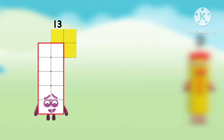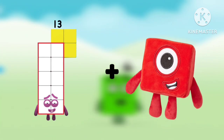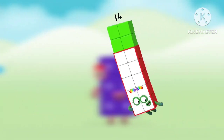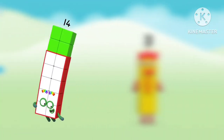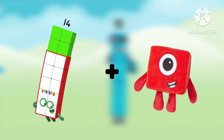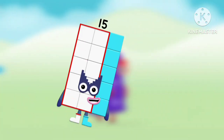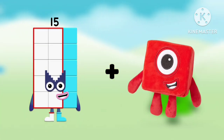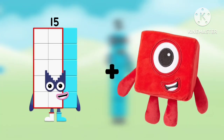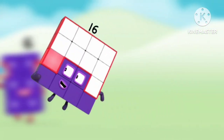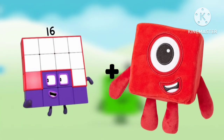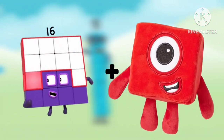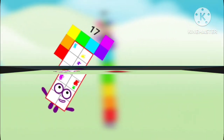Number blocks 13 plus number blocks 1 equals number blocks 14. Number blocks 14 plus number blocks 1 equals number blocks 15. Number blocks 15 plus number blocks 1 equals number blocks 16. Number blocks 16 plus number blocks 1 equals number blocks 17.